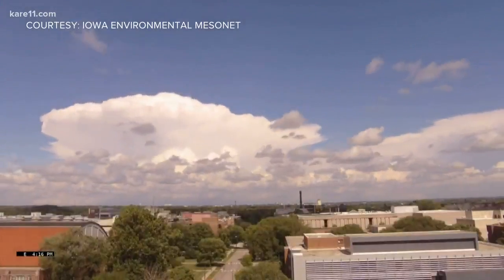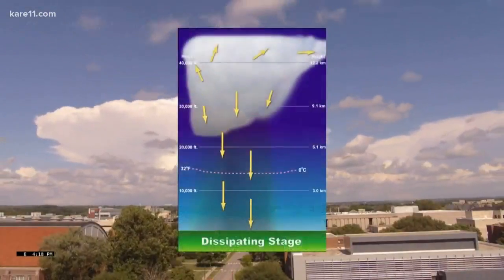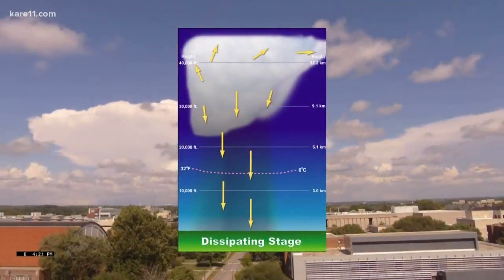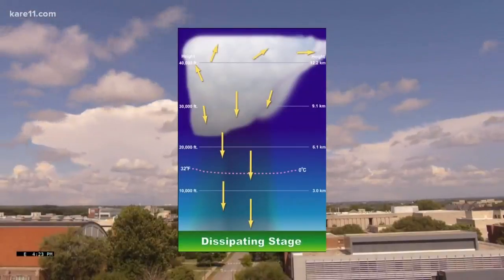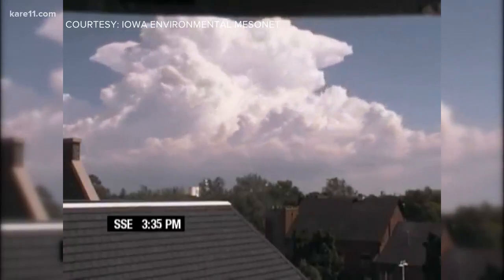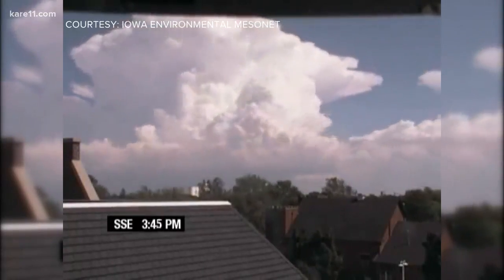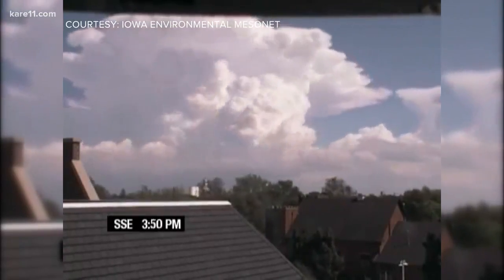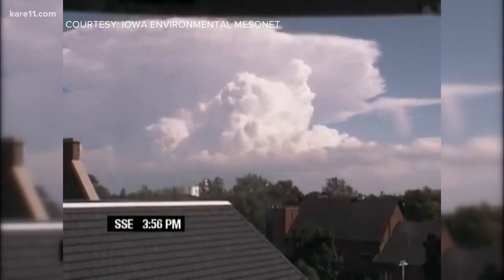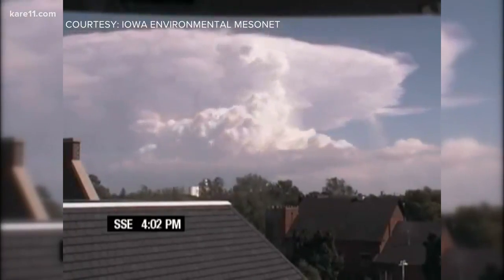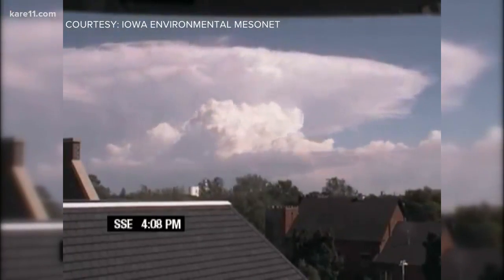This causes them to self-destruct and dissipate, which is stage three. When air mass thunderstorms pop up, expect a period of heavy rain, but like yesterday, we can also see landspouts, hail, and even high winds.